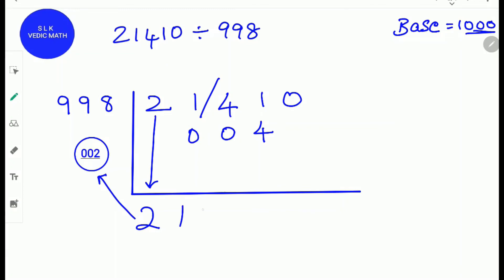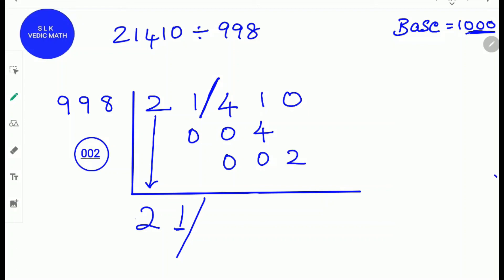1 plus 0 is 1. Place a remainder stroke to separate the remainder and quotient. Next, multiply this 1 with the complement 2. So 1 times 002 is 002. We write 2 as 002 because the base 1000 has three zeros in it.